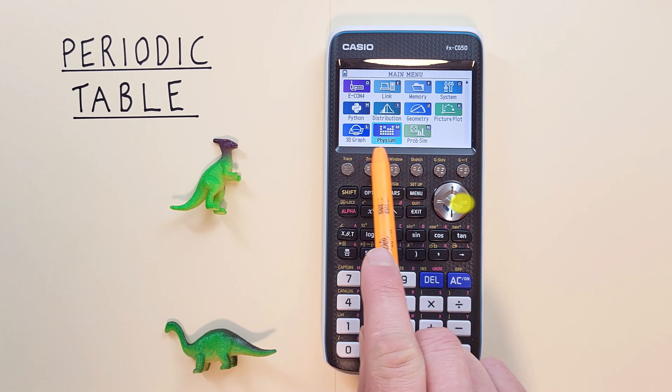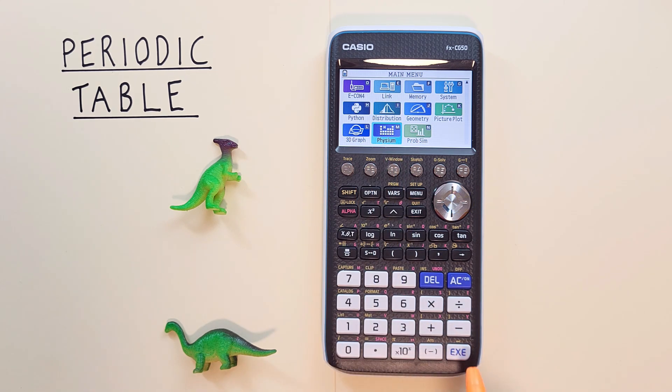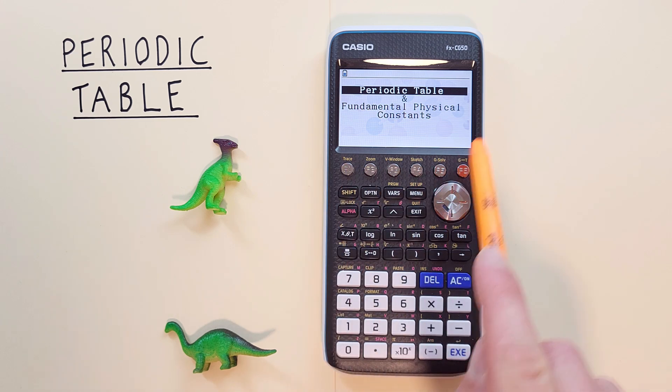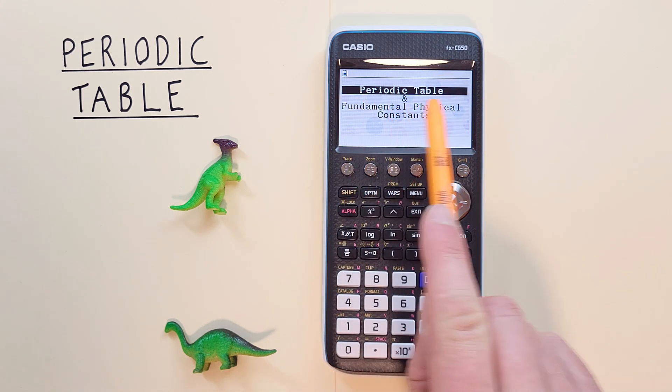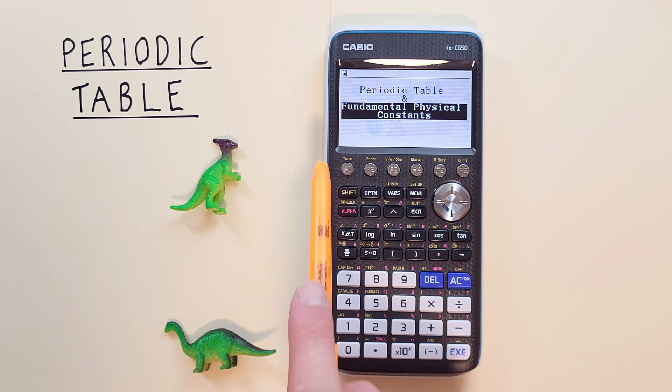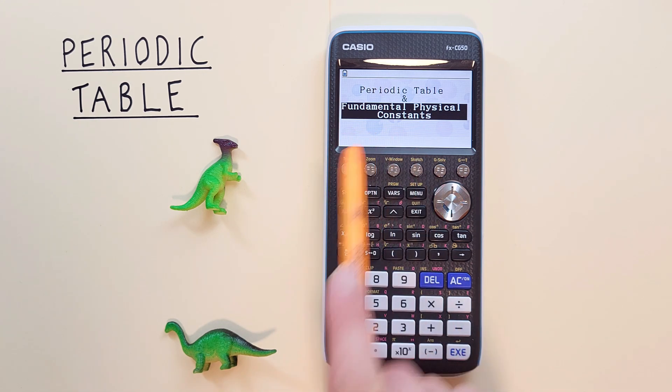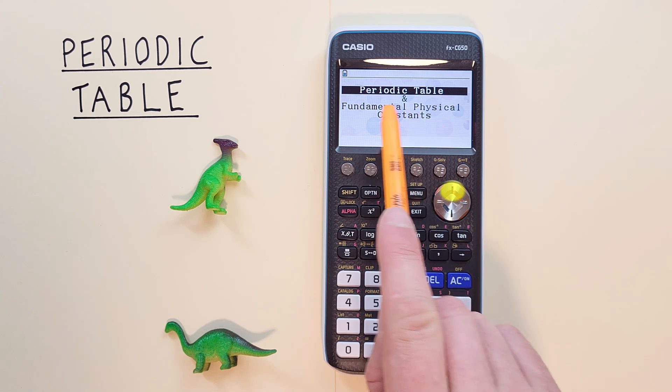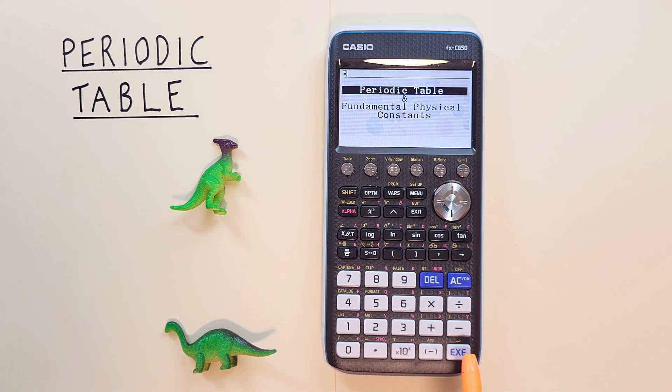So we highlight Physium and hit the EXE. Then we see this menu here. At the top we have periodic table and at the bottom we see fundamental physics constants. In this video we're looking at the periodic table. So we highlight that and hit EXE.